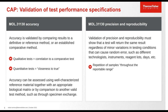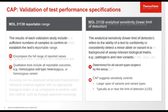Precision and reproducibility must show that the test will return the same result regardless of minor variations in testing conditions that cause random error, such as different technologists, instruments, reagents, and even days. It's important to have enough repetition of samples throughout the reportable range to establish this.